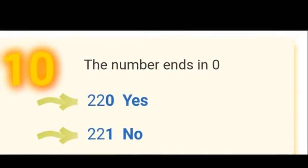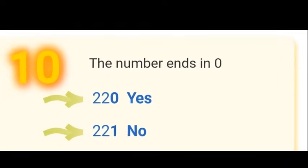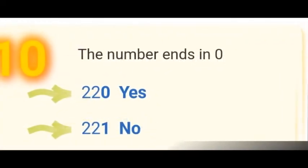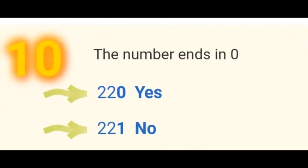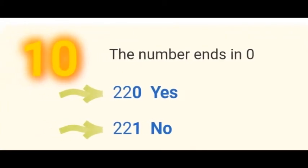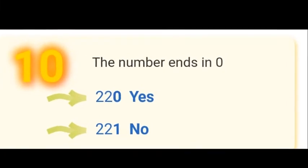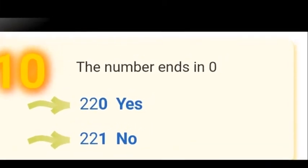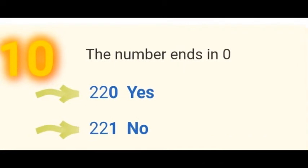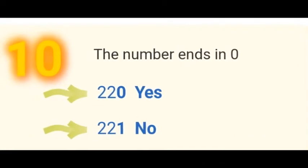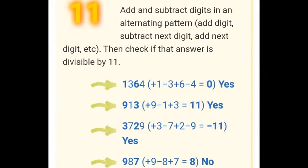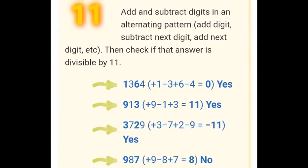Divisibility by 10 is very simple. Since all multiples of 10 end with 0, any number that ends with 0 — or has 0 at its units place — is divisible by 10.